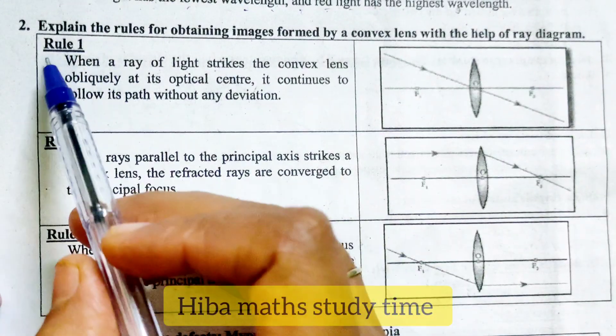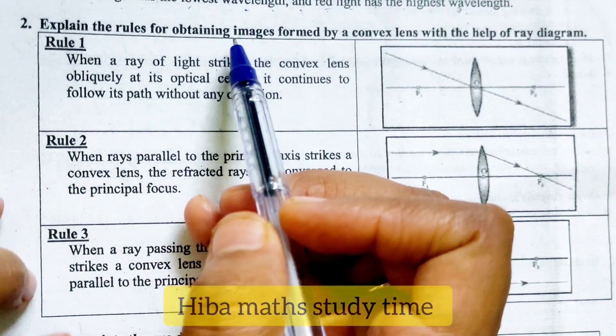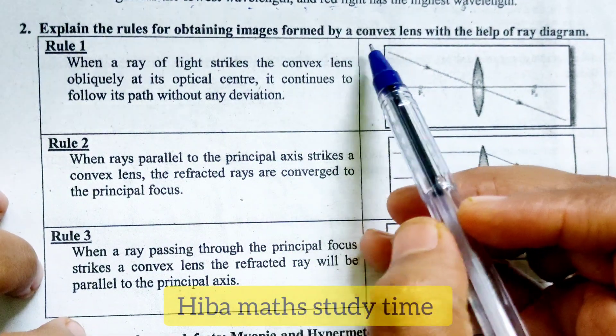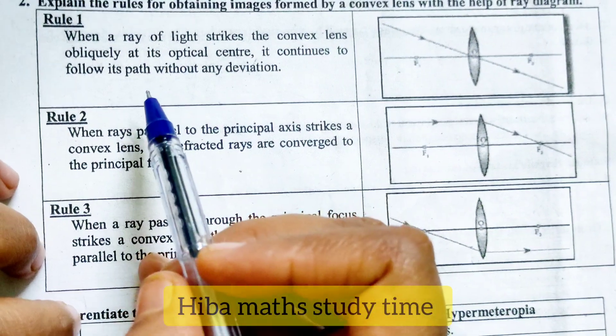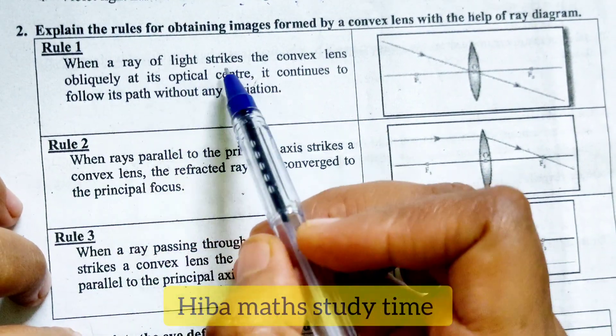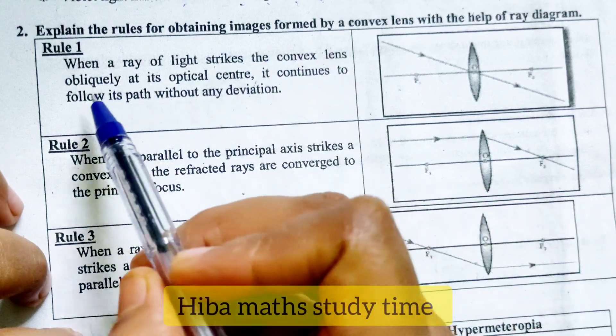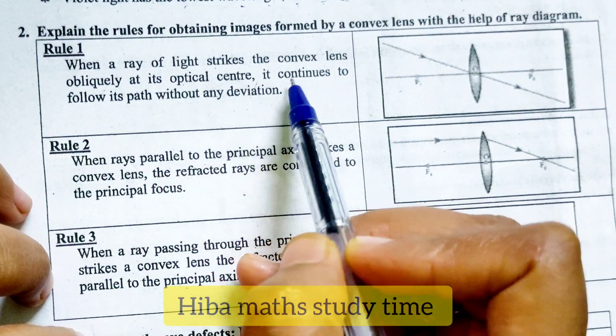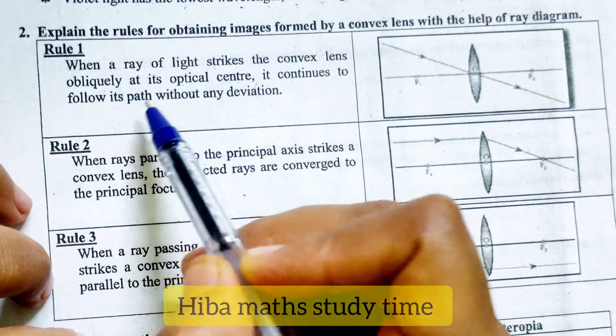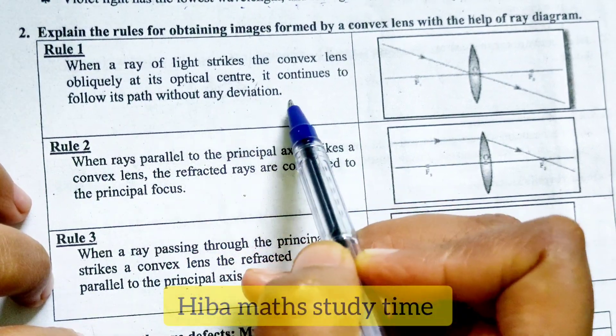Second question, explain the rules for obtaining images formed by a convex lens with the help of ray diagram. First rule 1, when ray of light strikes the convex lens obliquely at its optical center, it continues to follow its path without any deviation.